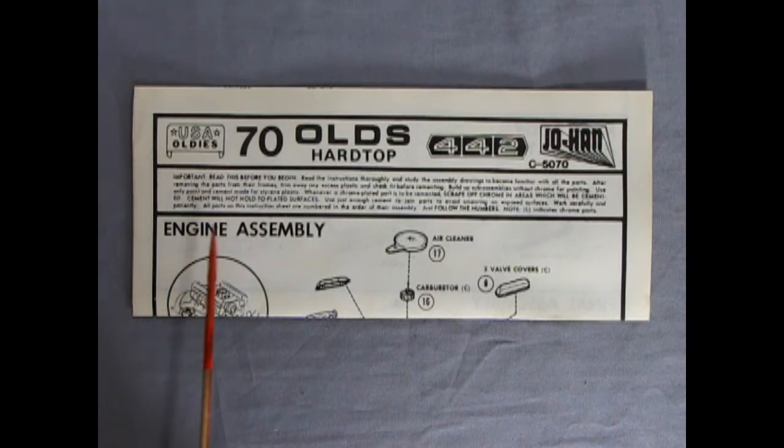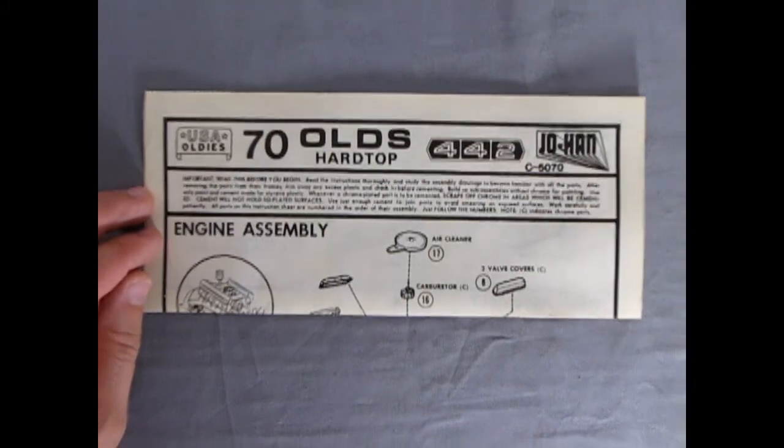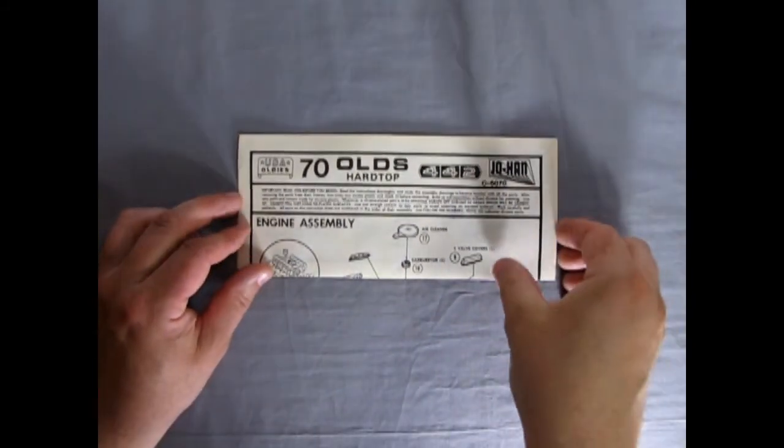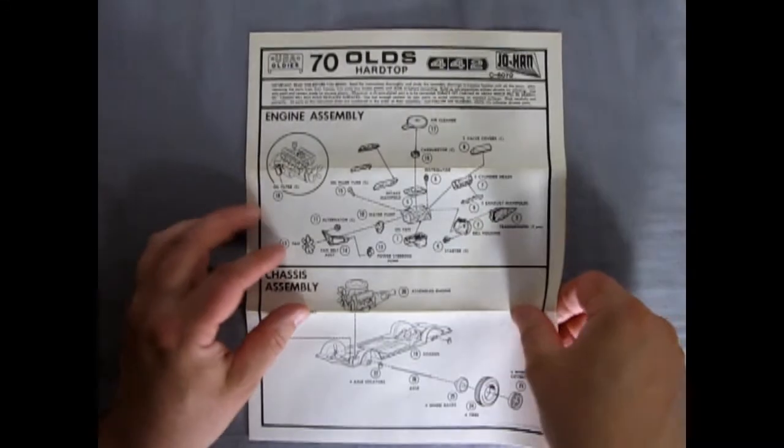Here's our Oldsmobile instruction sheet for our 1970 Olds Hardtop 442 USA Oldies by Johan. As you can see these are simple instructions. These are the one page front and back menu style like you'd get at a restaurant.